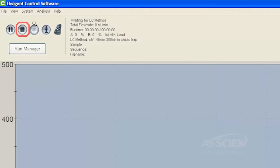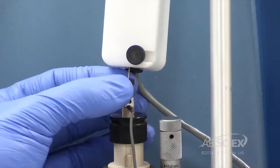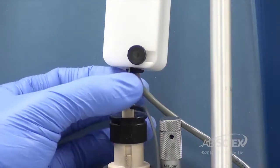Stop any flow in the Exigent software. Disconnect the tubing from the electrode and remove the column heater.